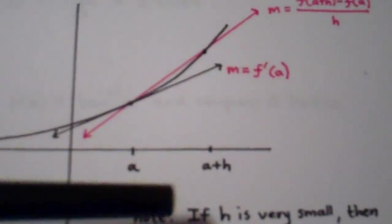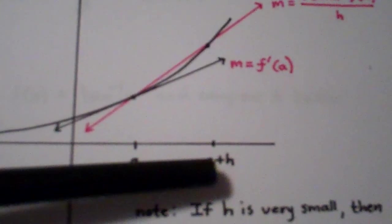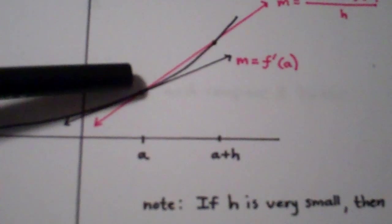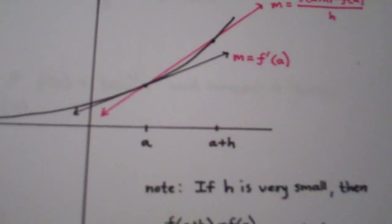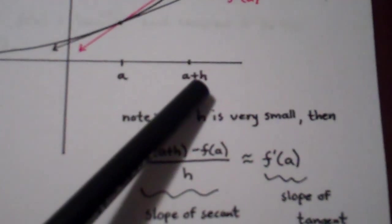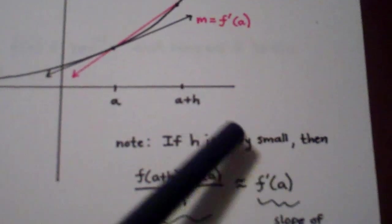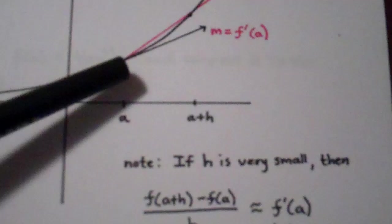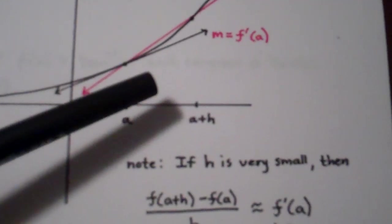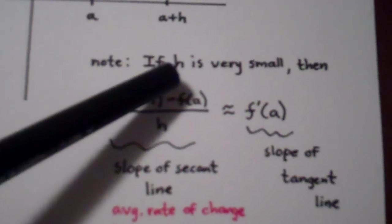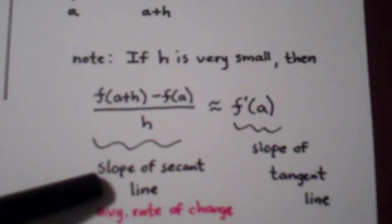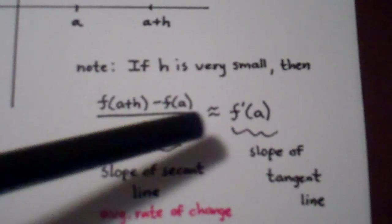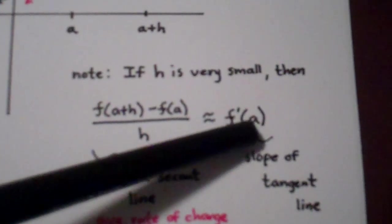So what we said was that as h goes to zero, this secant line is going to slide down the graph and approach the tangent line. Well, if the value of h is very, very small, then that secant line is going to be very close to the actual tangent line, hence their slopes are going to be approximately equal. So what I say here is if h is very small, then the slope of that secant line, which is [f(a+h) - f(a)] all divided by h, that's going to be very close to the slope of the tangent line, which is the derivative at a.